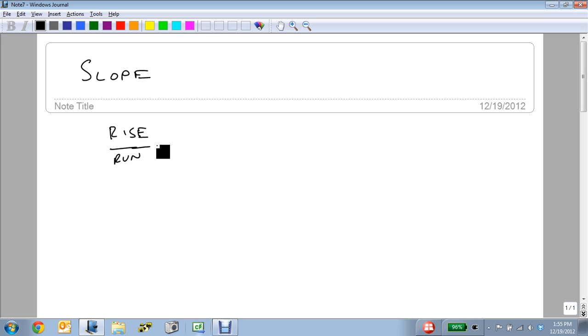If something rises very quickly or drops very quickly compared to how far it runs, then we say it's steep and it has a slope.